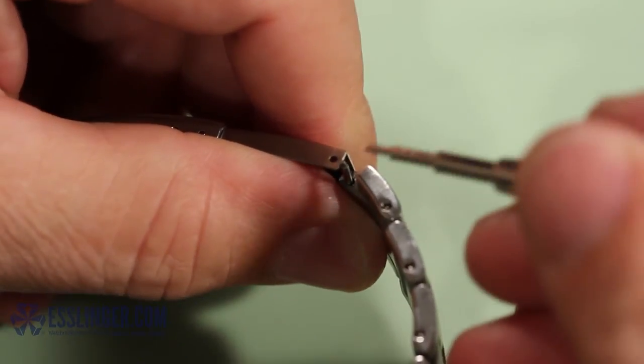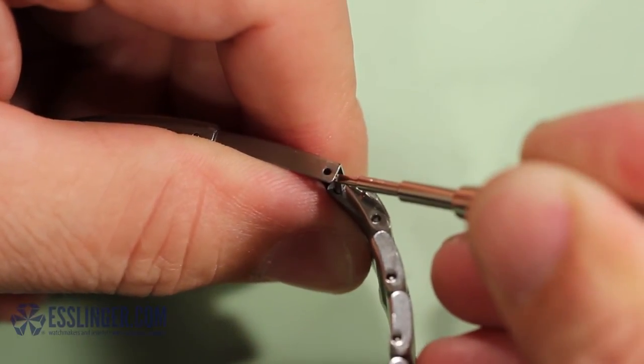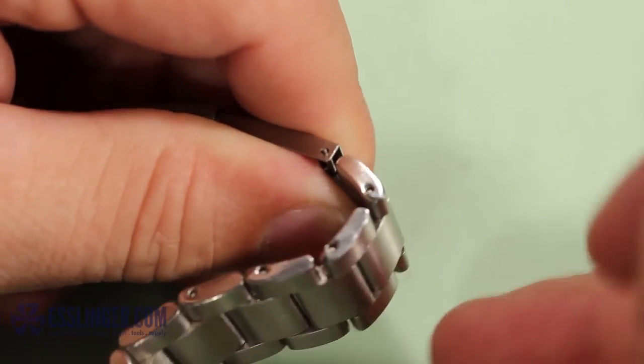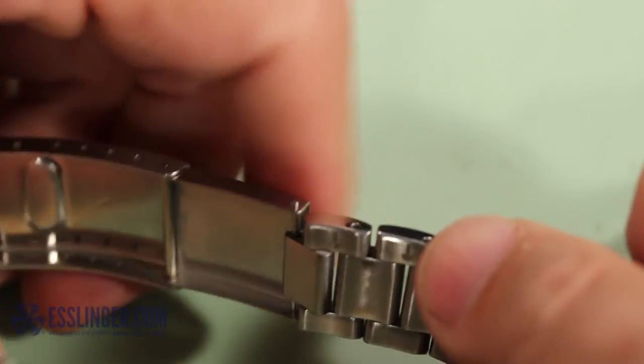Keeping the two pieces held together, grab your spring bar tool and push the top end of the spring bar down with the forked end. Slide the end of the watch band and the spring bar the rest of the way into the extender.